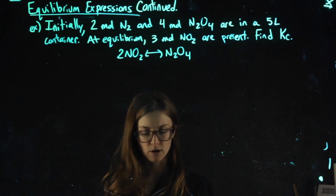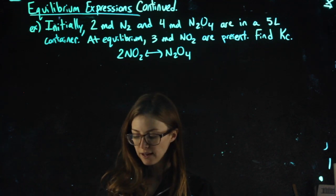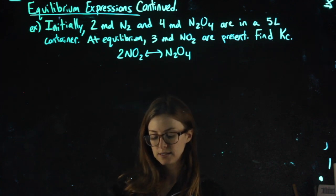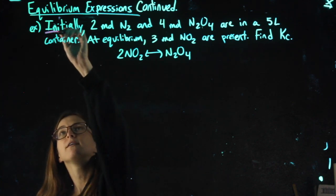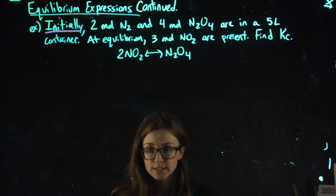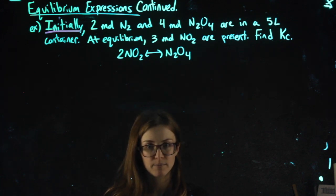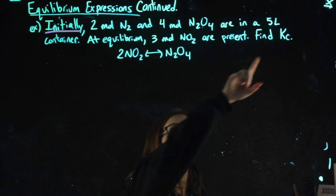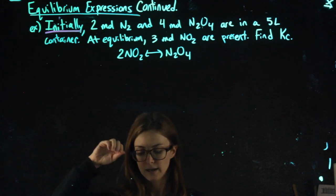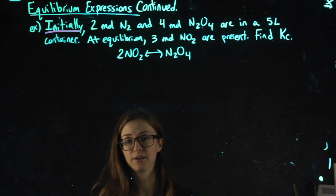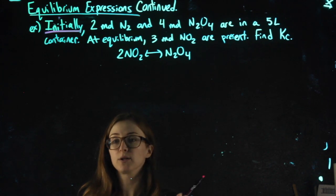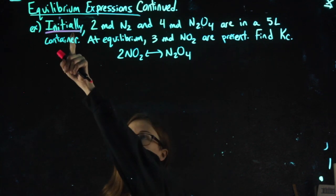Okay, this problem is a step harder, and I know that right off the bat because of the word initially. Initially tells me that we are not at equilibrium. When I have KC expressions, I have to plug in equilibrium values. So if I don't have equilibrium values, which I don't if they say initially,